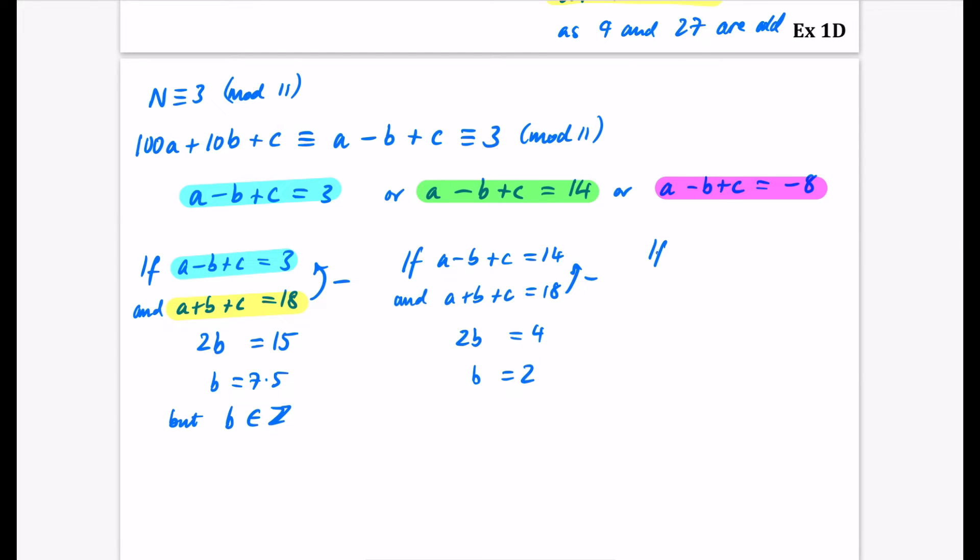And our last one we'll check if A minus B plus C is equal to minus 8 and A plus B plus C is equal to 18. If I do the same process of solving these simultaneous by subtracting them, I get that 2B is equal to 18 minus minus 8, which is 26. So B is equal to 13. But 13 is not a single digit. So this is the one that we are interested in. It's this middle one that we've got here with the green and the yellow.